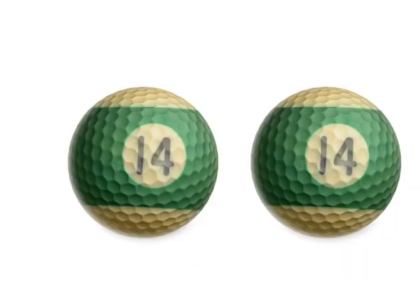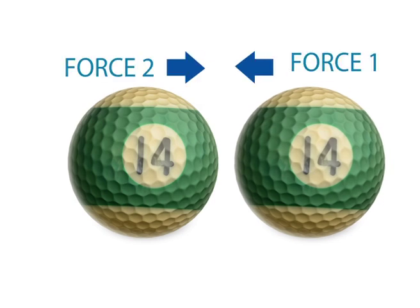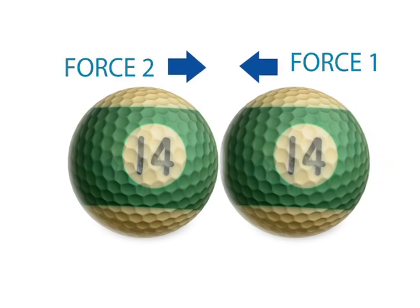Third law: when a first body exerts a force on a second body, the second body simultaneously exerts a force on the first body. This means that force 1 and force 2 are equal in magnitude and opposite in direction.